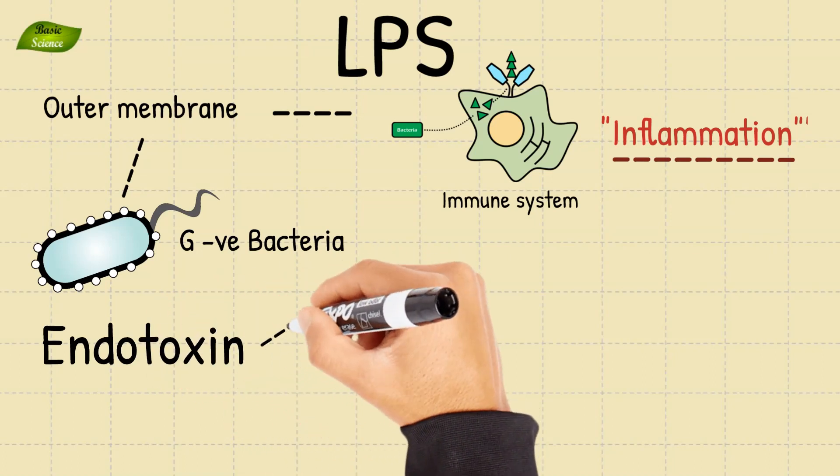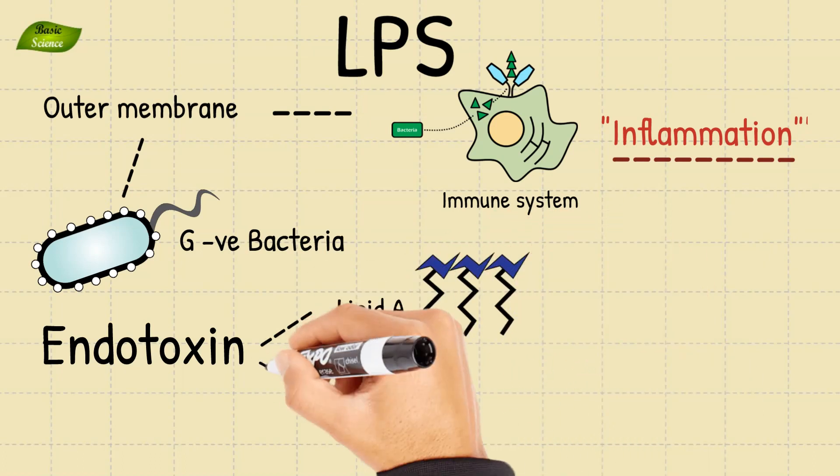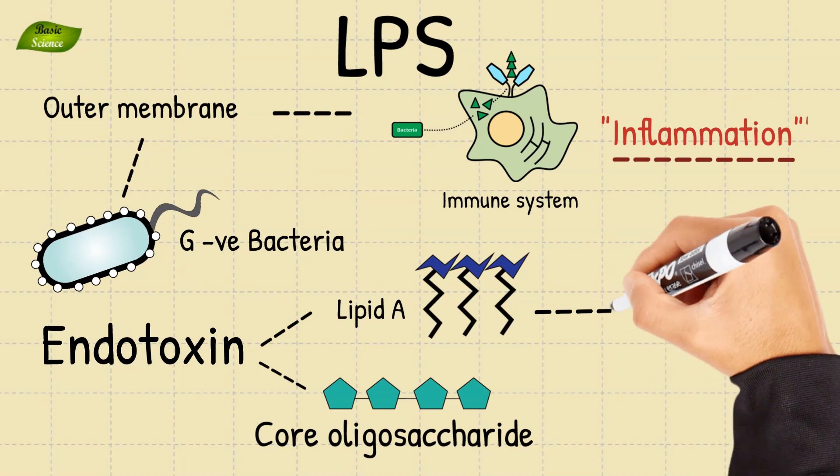LPS, also known as endotoxin, is composed of two parts: lipid A and core oligosaccharide. Lipid A is responsible for the toxic effects of LPS while the core oligosaccharide is responsible for its immunogenic effect.